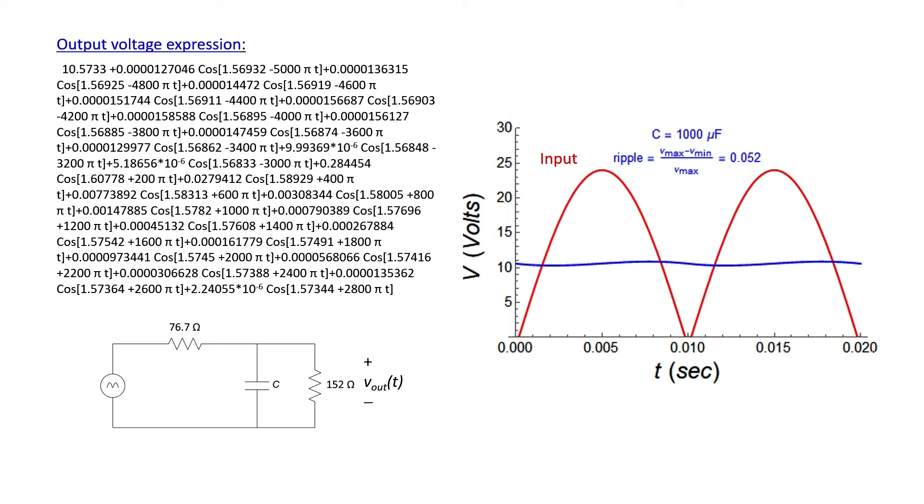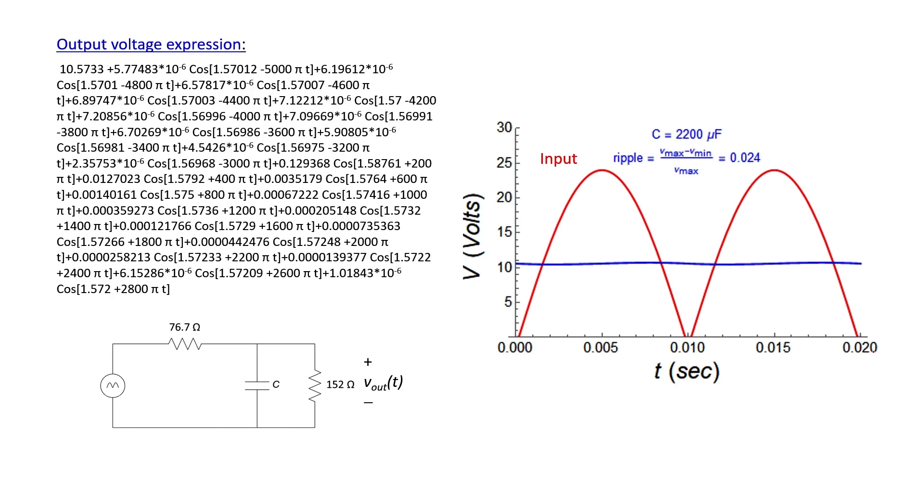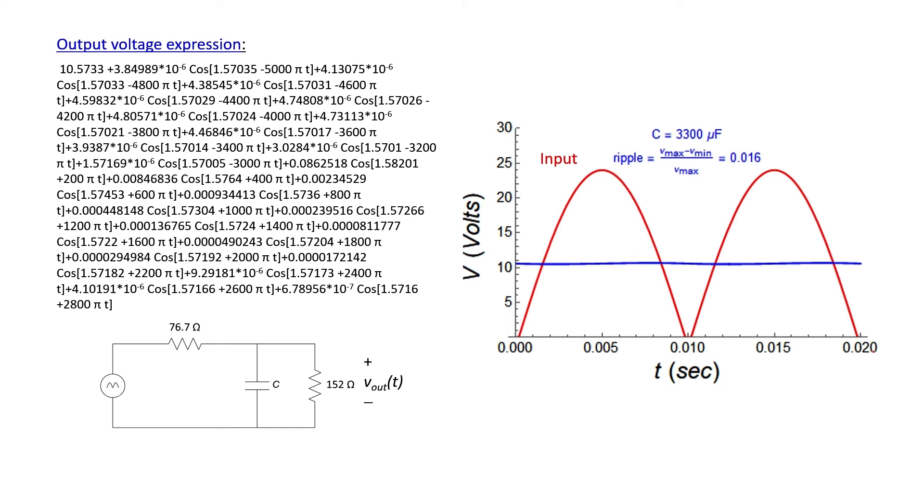That's what we expect the larger the capacitor becomes. 1000 microfarads, we're almost at a 5% ripple now. 2.2 millifarads and finally 3.3 millifarads. The solution here tells us that our ripple is less than 2%.